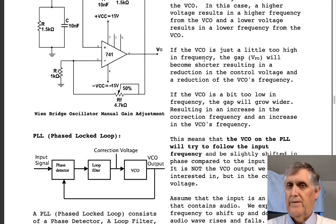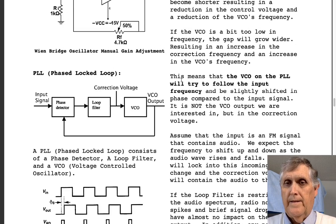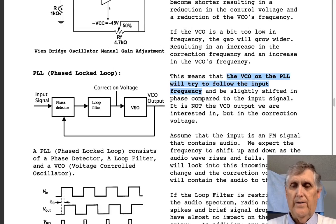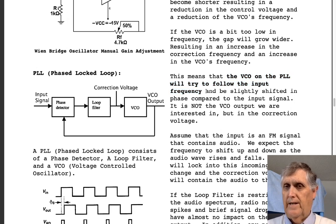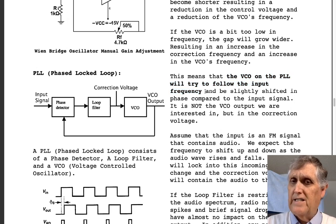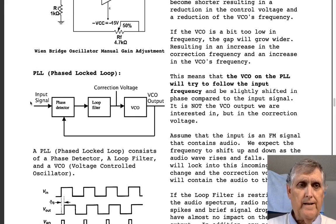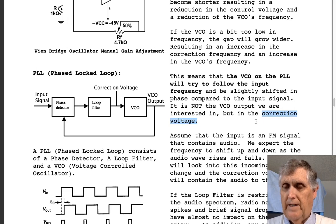If we're a little higher in frequency, the gap shortens, the control voltage changes, and that'll change the VCO's frequency. If we're too low in frequency, the gap grows wider, resulting in an increase in the correction voltage, increasing the VCO's frequency. The bottom line—what you need to take away—is that the voltage-controlled oscillator here will try to follow the input frequency. It may be slightly shifted in phase compared to this input signal, but if you put a frequency counter here and here, you're going to see the exact same frequency. And again, the part we're interested in is not that output but the correction voltage.